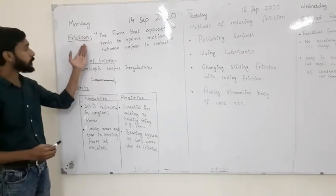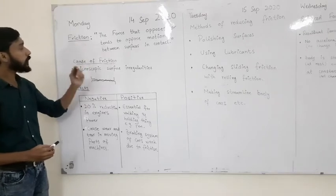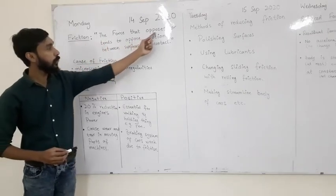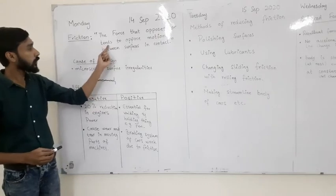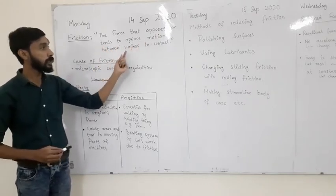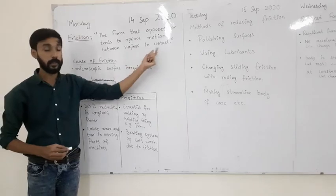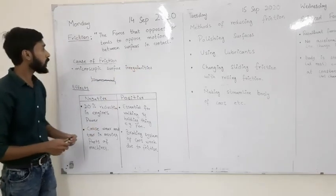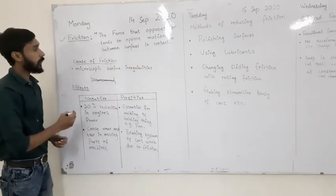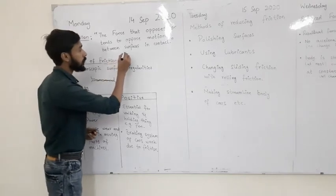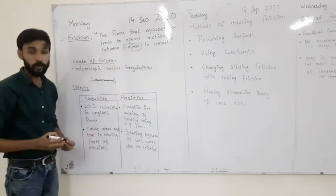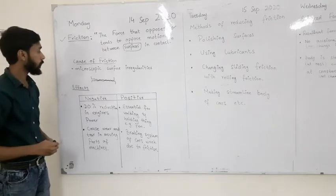What is friction? Friction is the force that opposes or tends to oppose motion between surfaces in contact. Friction exists between two or more surfaces.